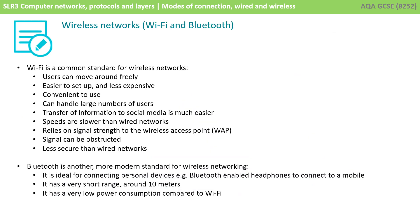To recap: Wi-Fi is a common standard for wireless networks. Users can move more freely, it's easier to set up and less expensive, it's convenient, and it can handle a large number of users. Transfer of information to social media is much easier. However, speeds tend to be slower than wired networks, it relies on signal strength to the wireless access point, signals can be easily obstructed, and it is generally considered less secure. Bluetooth is another more modern standard for wireless networking, ideal for connecting personal devices. It has a very short range — typically around 10 metres — but very low power consumption compared to Wi-Fi.